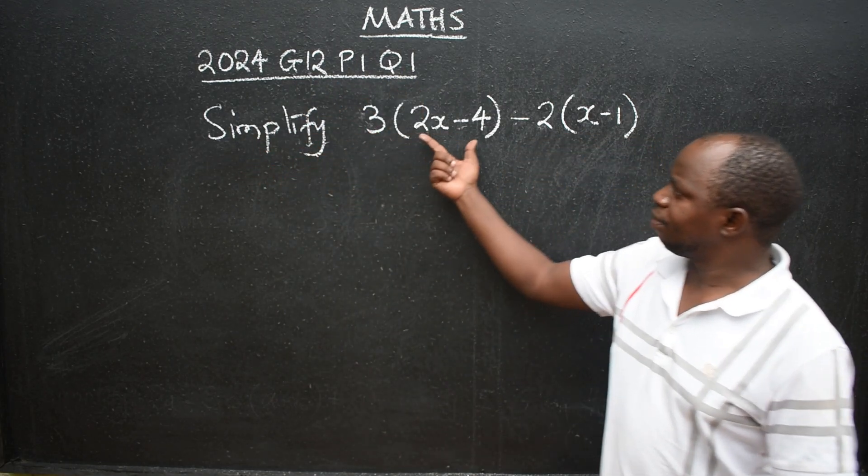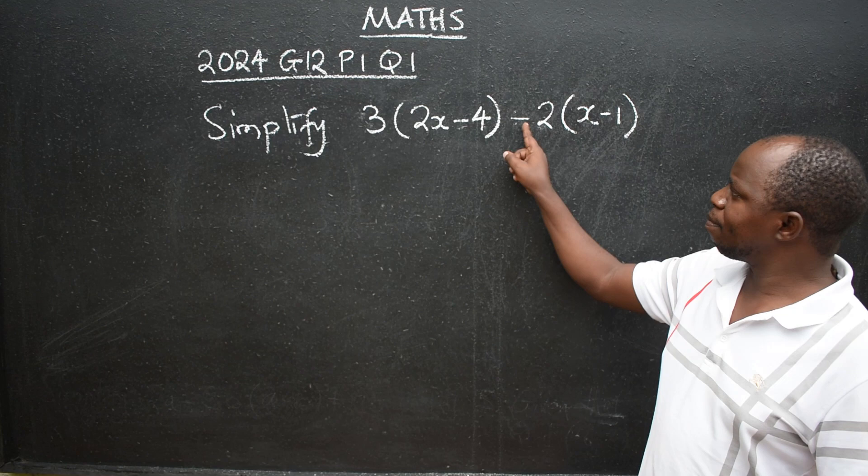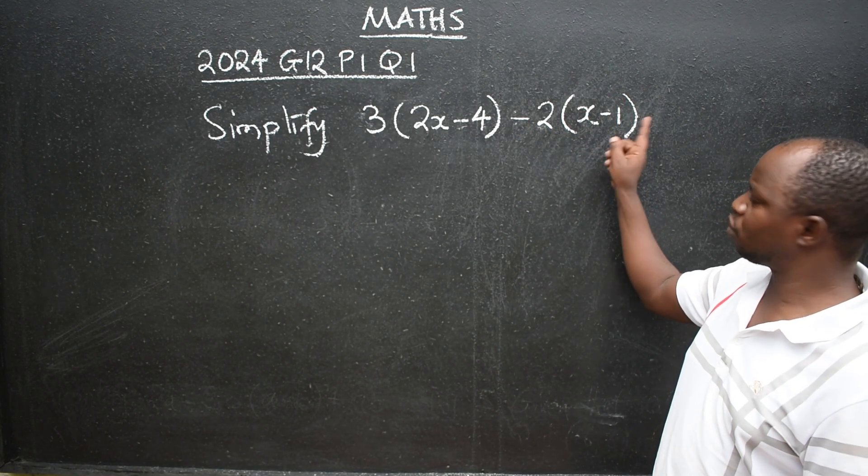So, simplify 3 in brackets we have 2x minus 4, minus 2 in brackets we have x minus 1.